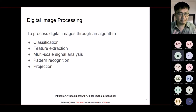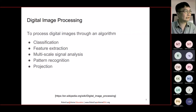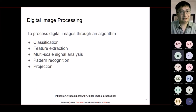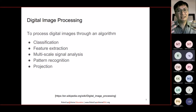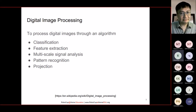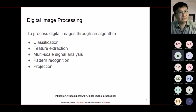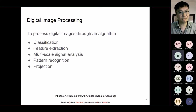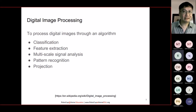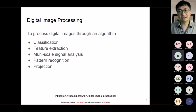Digital image processing is the process where we process images using some algorithm in order to achieve certain objectives. For example, we can achieve classification — classifying objects in the image. Feature extraction means identifying a standard pattern that exists. For object recognition, we want to find whether a similar pattern exists in a given image. We can also do multi-scale signal processing, signal analysis, pattern recognition, projection, and so on. There are many things we can do using algorithms to process image data to obtain higher-level information.